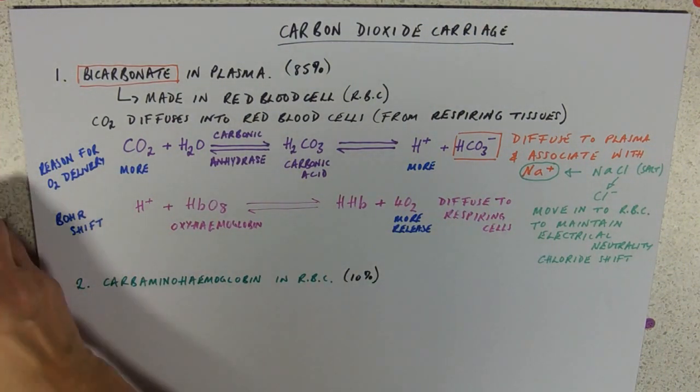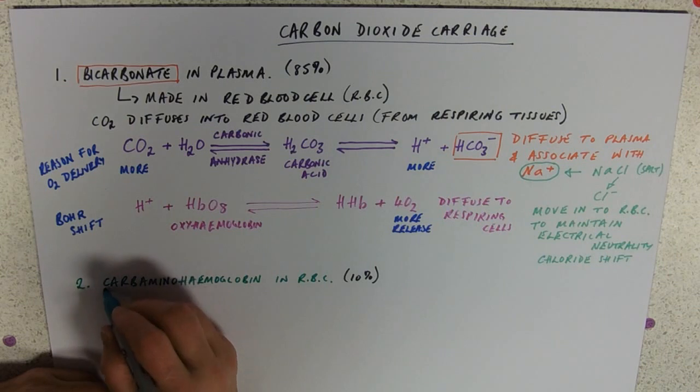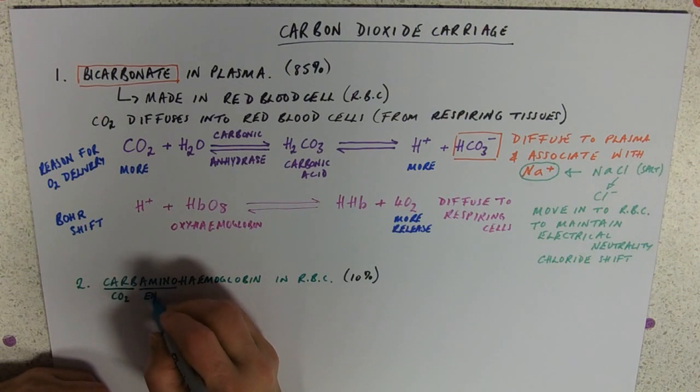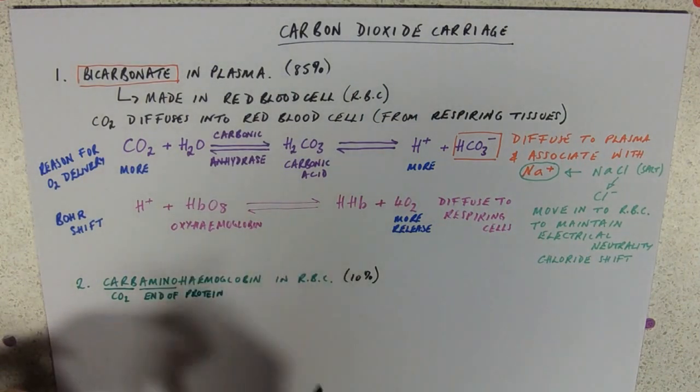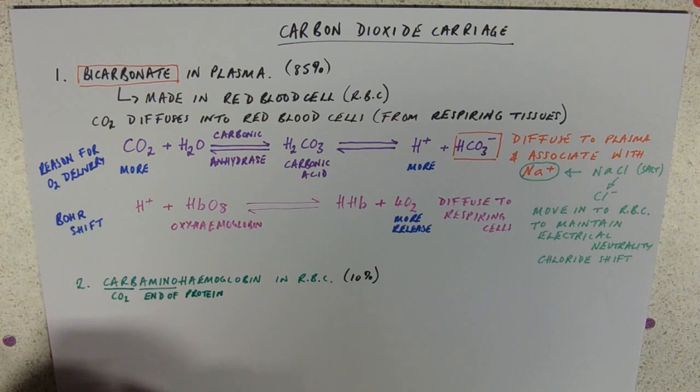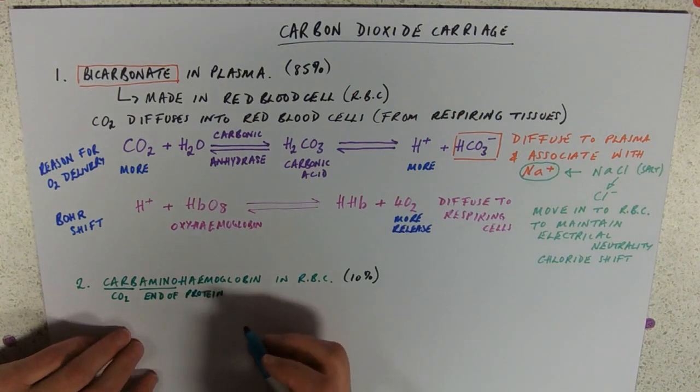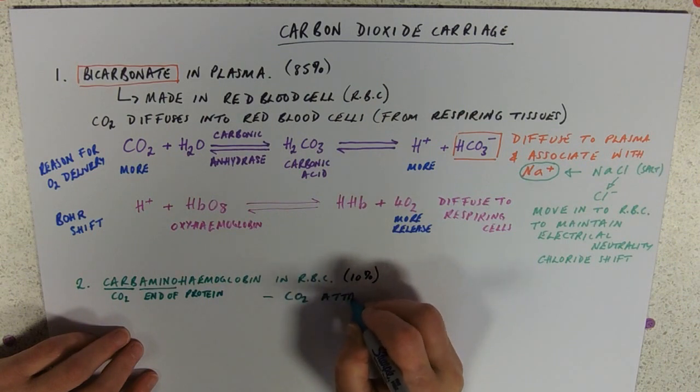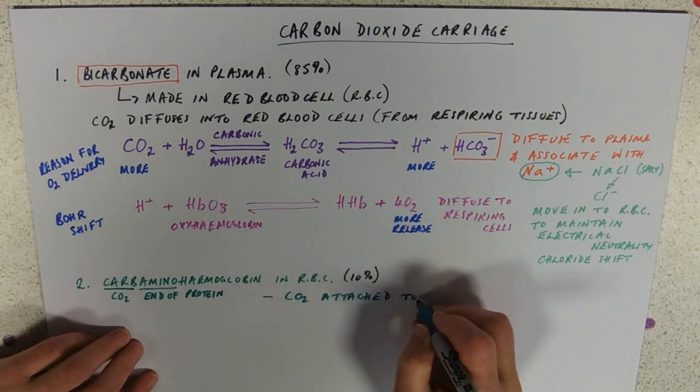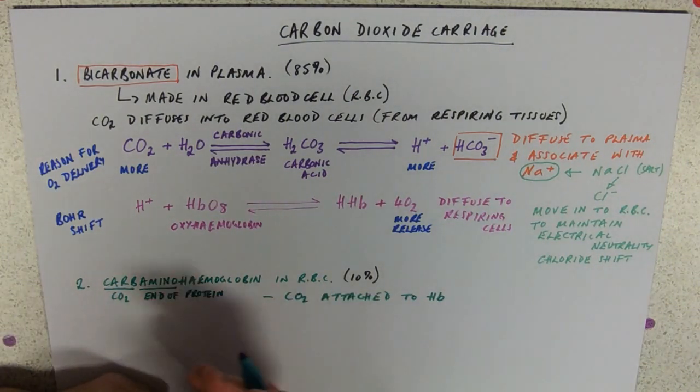And this is because carbon dioxide can directly attach. So this carb refers to CO2. This refers to the end of the protein it attaches to. So remember from core biological molecules or amino acids and therefore proteins have an amino end and a carboxylic acid end. It means that the carbon dioxide attaches to the haemoglobin. So this is CO2 attached to haemoglobin. And it just so happens to be at the amino end.